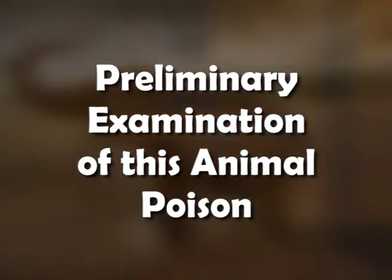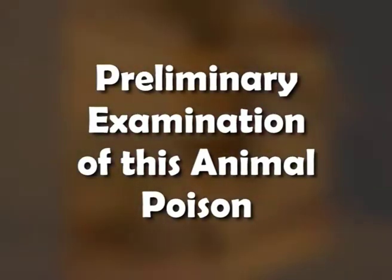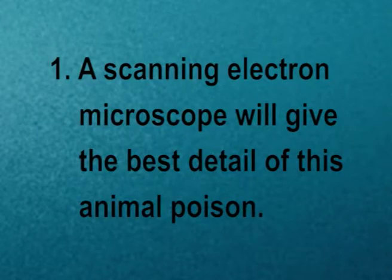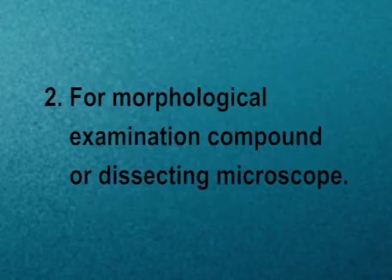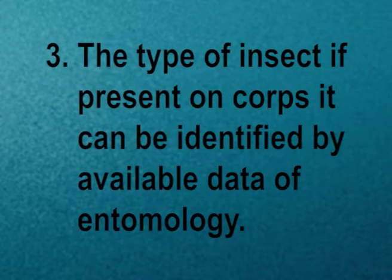With this, we come to the end of Module 1. We now move on to Module 2: Preliminary Examination of Animal Poison. A scanning electron microscope will give the best detail of animal poison for morphological examination, along with compound or dissecting microscopes. The type of insect, if present on the corpse, can be identified by available entomological data.